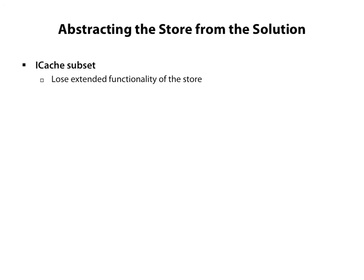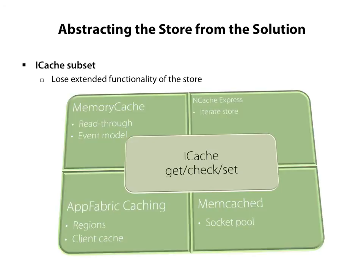The drawback of iCache is that the only functionality we can use in the framework is what's specified by the interface, so we lose any extended functionality the cache store may have. For instance, NCache Express lets you iterate through all the items in the cache, but most other stores don't, so it's not generic functionality and it's not built into the iCache interface. Using NCache Express through the iCache wrapper, you'll lose the ability to navigate through the cache.